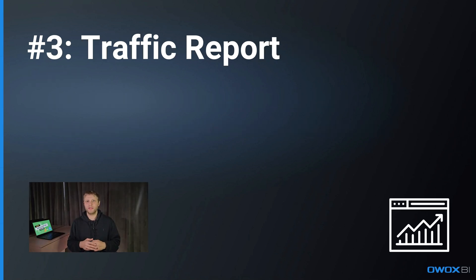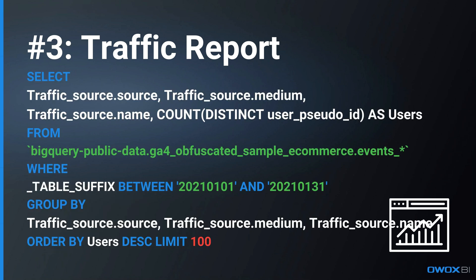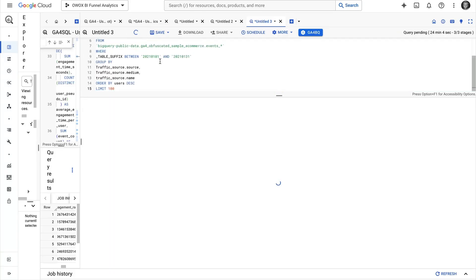Next, traffic details. If you need to analyze the default traffic sources for your user acquisition, you can run our next query. We'll select traffic_source.source, traffic_source.medium, and traffic_source.name. We use a dot between the parent field and the nested field name because those fields are nested inside the main one. We'll add total users count as the metric, using user_pseudo_id to calculate the number of users. We'll group everything by all of the traffic dimensions one by one, and order it by the number of users descending. Here you can see the results on screen.